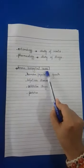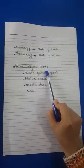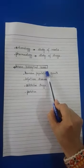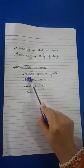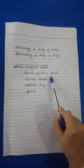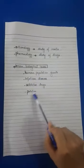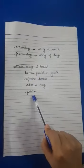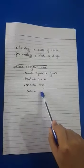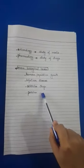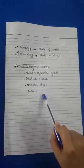What are the main biological issues today? There are some biological issues that human populations need to face: human population growth, infectious diseases, addictive drugs, and pollution. This was our lecture number one — you can go through it and learn it. God bless you.